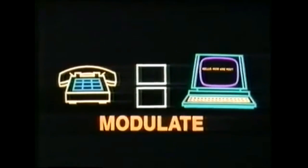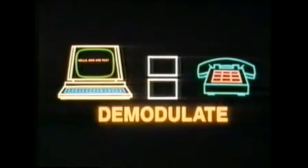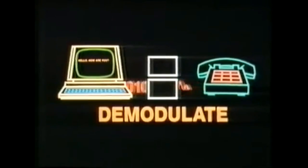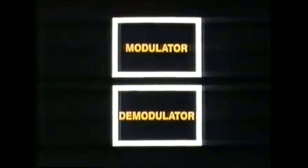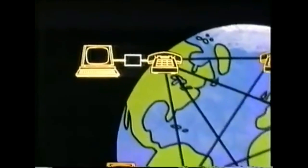To make it two-way communication, computer B needs a second black box to modulate its owner's message from computer talk to telephone talk, and computer A needs a second black box to demodulate that message from telephone talk back into computer talk. But to save having to buy two black boxes for each computer, a modulator and a demodulator can be combined into one box — a modulator-demodulator, or a modem.